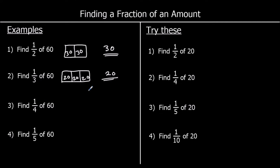Question 3: one quarter of 60. So 60 split up into four equal bits. 60 divided by 4. To divide by 4 we can halve and halve again. And question 4, we're splitting 60 up into five bits. So 60 divided by 5. How many fives make 60? That's 12.